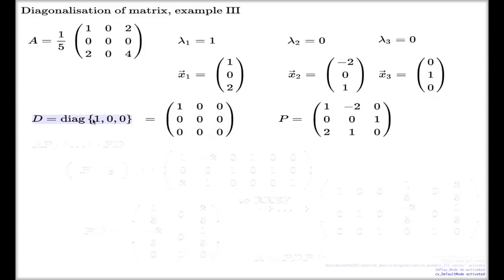With this choice of D and P, we have the semi-diagonalization relation as before. And given if we can see that P is invertible, so if you can see that these vectors are linearly independent, then we also have complete diagonalization identity.